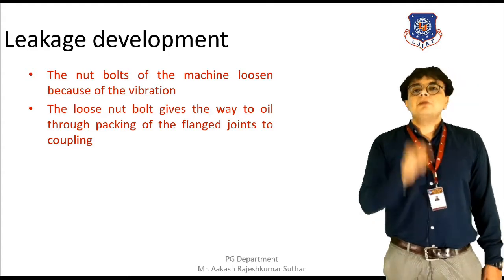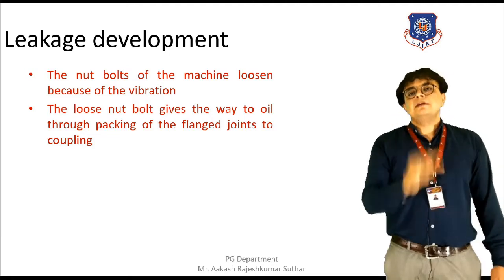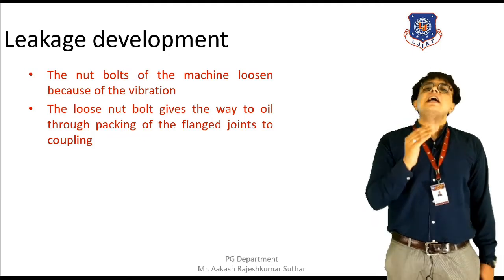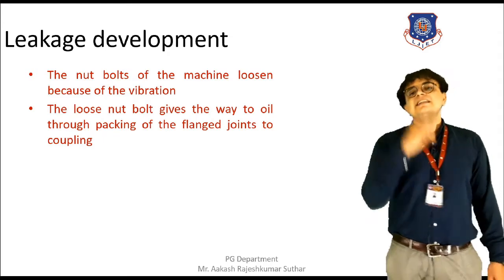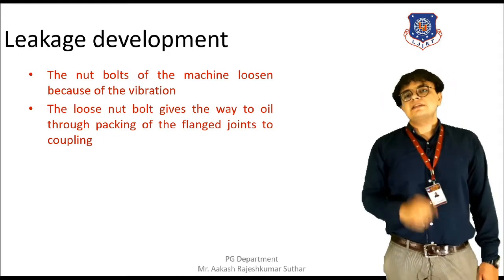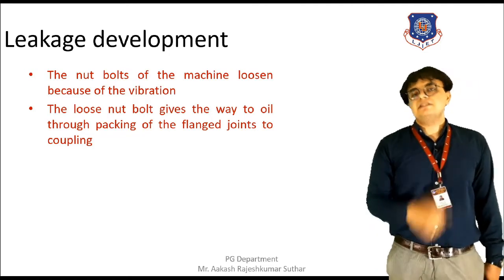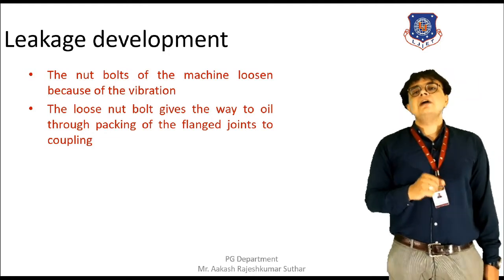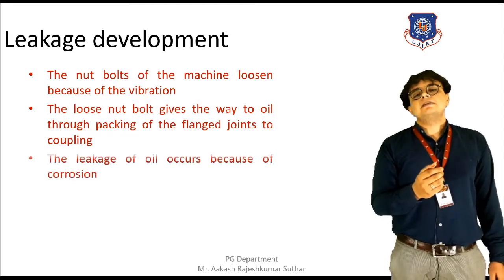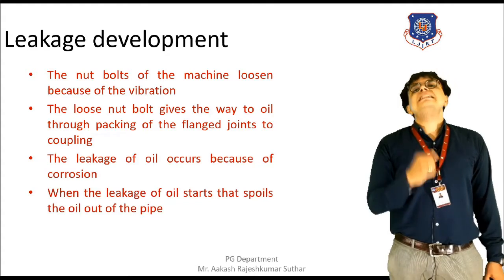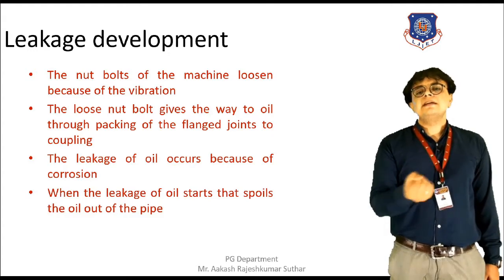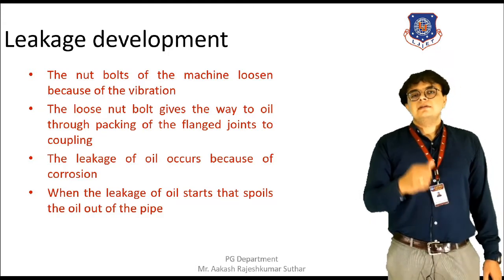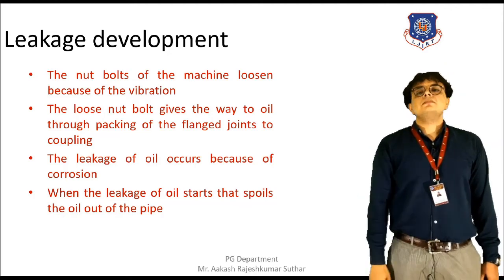Leakage also occurs because of corrosion. Because of corrosion, the dimension of the material — for example, a pipe — will get modified, and it will mostly reduce. Because of this reduction in dimension, the load-resisting capacity of the material will get reduced. As a result, the formation of cracks and crevices will be found at the surface, and from these crevices, the possibility of oil leaking occurs. If oil or any lubricant is leaking out from the material, it will spoil the overall material and cause further erosion. This is how corrosion leads to leakage.